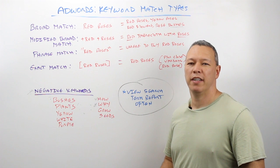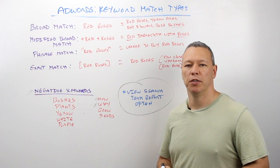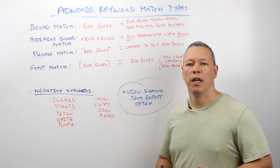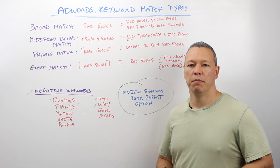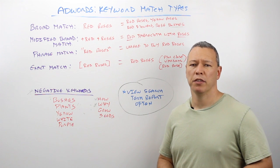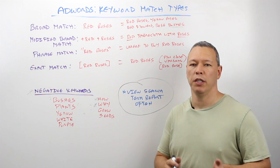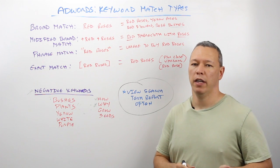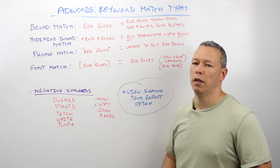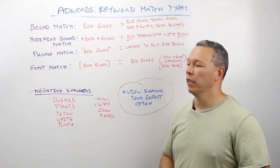Hey, this is Gary from 3Bug Media. Today we're going to talk about the different match type options when using Google AdWords. The type of match type you use when creating your campaigns plays a critical role in who's going to see your ad and how relevant that is to the searcher. We're going to go over the four different types today and give you some tips on how to use them effectively.